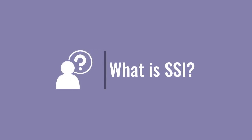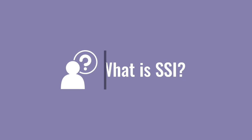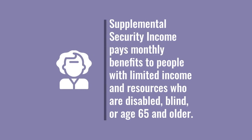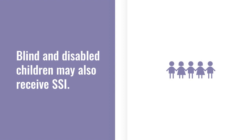What exactly is SSI? SSI stands for Supplemental Security Income. You can get SSI if you are disabled, blind, or age 65 and older. You must be low income and have limited resources. Blind and disabled kids can receive SSI too.